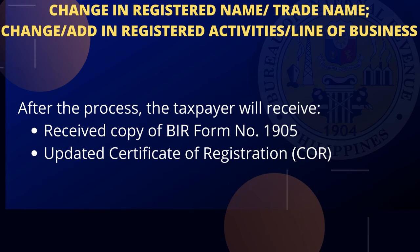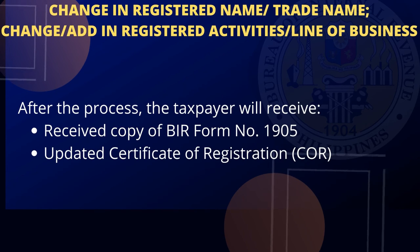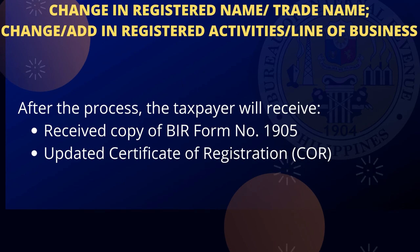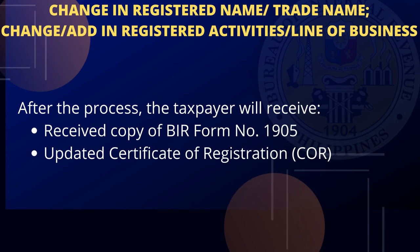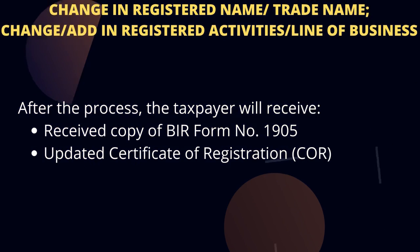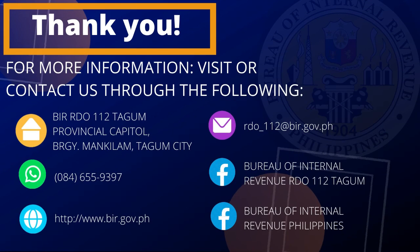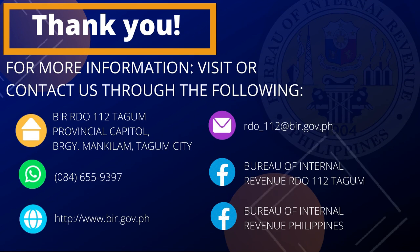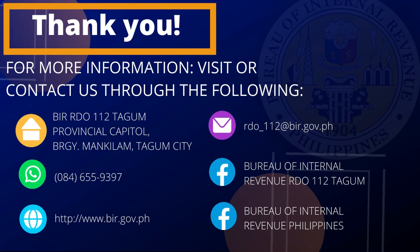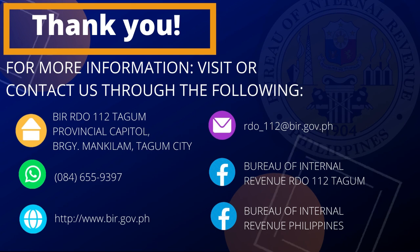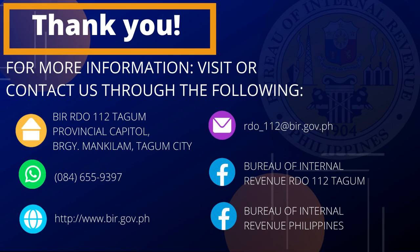After the process, the taxpayer will receive the received copy of BIR Form Number 1905 and updated certificate of registration or COR. That's all for registration information updates. Thank you. For more information, visit or contact us through the following.